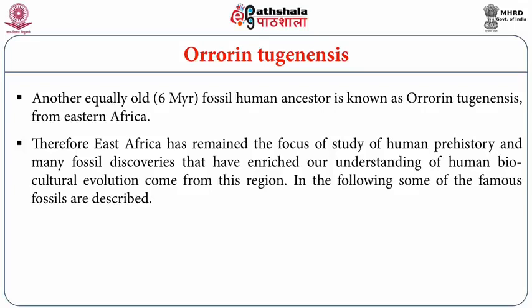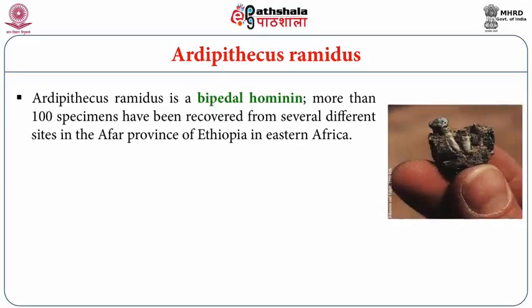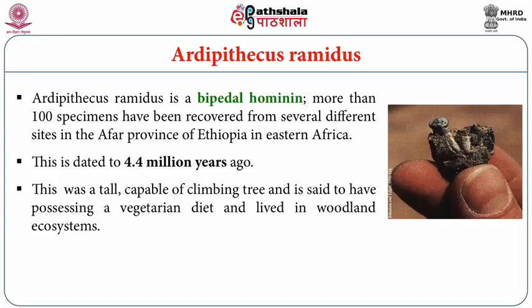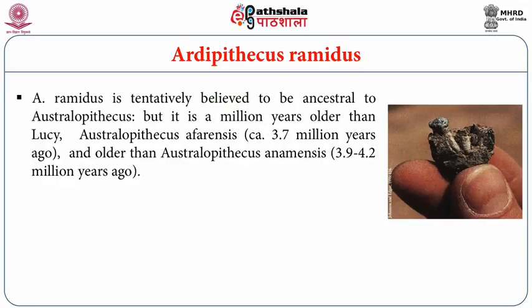Ardipithecus ramidus is a bipedal hominin. More than 100 specimens have been recovered from several locations in the Afar province of Ethiopia, dated to about 4.4 million years ago. It was capable of climbing trees, is said to have had a vegetarian diet, and lived in woodland ecosystems with no evidence of tool making. Ardipithecus ramidus is tentatively believed to be ancestral to Australopithecus, but is a million years older than Lucy (Australopithecus afarensis, dated to 3.7 million years ago) and older than Australopithecus anamensis (dated to 3.9 million years ago). Both the latter were not tool makers.